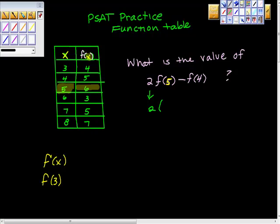So now we have this 2, 2 times this 6. f(5), when x is 5, we get 6.